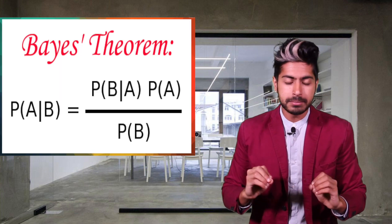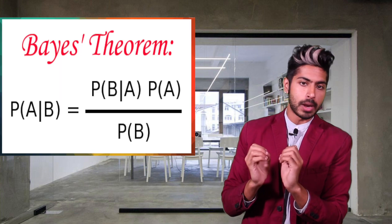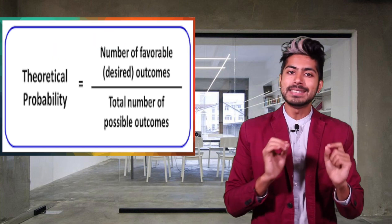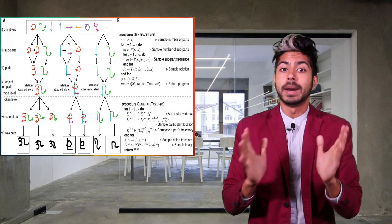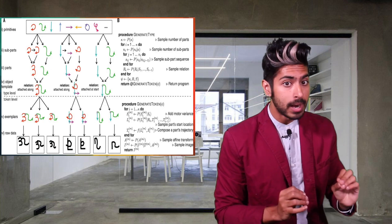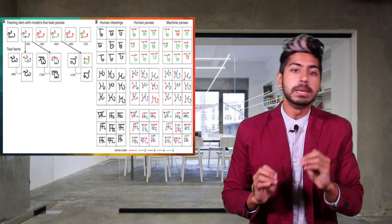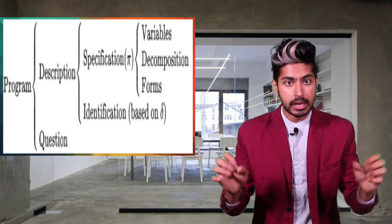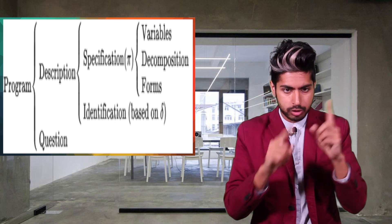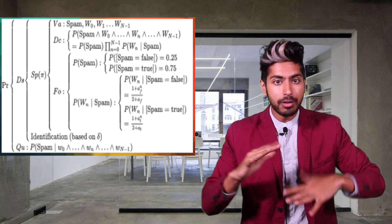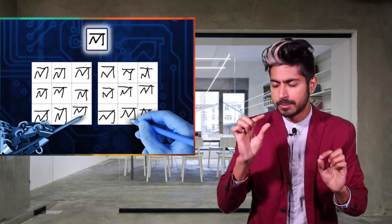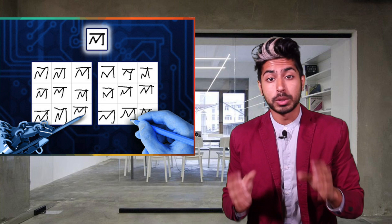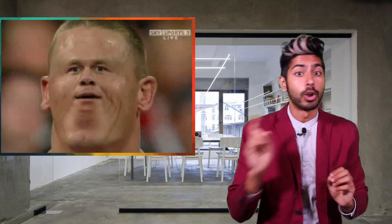They use something called Bayesian Program Learning, or BPL, to do this. Bayesian refers to Bayes' theorem, which attempts to use simple stochastic programs to represent concepts. The word stochastic refers to the theory of probability, which is what Bayes' theorem loosely revolves around. BPL builds these simple stochastic programs compositionally from parts, sub-parts, and spatial relations — all existing in a hierarchy of knowledge gained through little experience. They trained it on a dataset of handwriting characters, and it was able to recognize characters with a better error rate than deep learning or even humans.